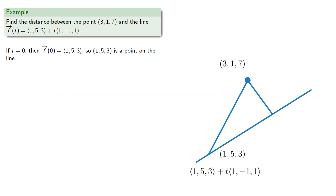The vector from this point to the point on the line is going to be... And now we have one side of a right triangle.